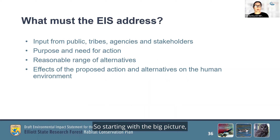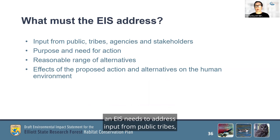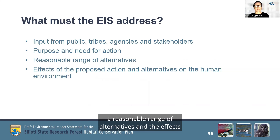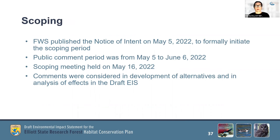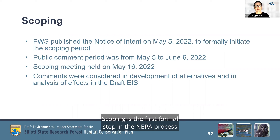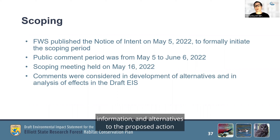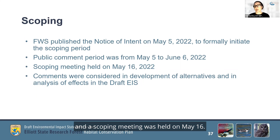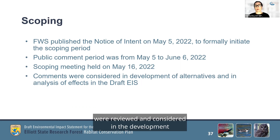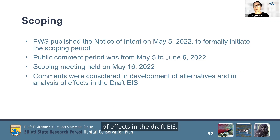What must the EIS address? Starting with the big picture: an EIS needs to address input from the public, tribes, agencies, and stakeholders; the purpose and need for the federal action; a reasonable range of alternatives; and the effects of the proposed action and alternatives on the human environment. Scoping is the first formal step in the NEPA process. During scoping, the public, tribes, organizations, and agencies assist in the development of the EIS by identifying important issues, information, and alternatives to the proposed action that should be considered. The Service formally initiated the scoping period on May 5th of this year by publishing a notice of intent to prepare an EIS. The public comment period was from May 5th to June 6th, and a scoping meeting was held on May 16th. All comments received during scoping were reviewed and considered in the development of alternatives and in determining the scope of analysis of effects in the Draft EIS.